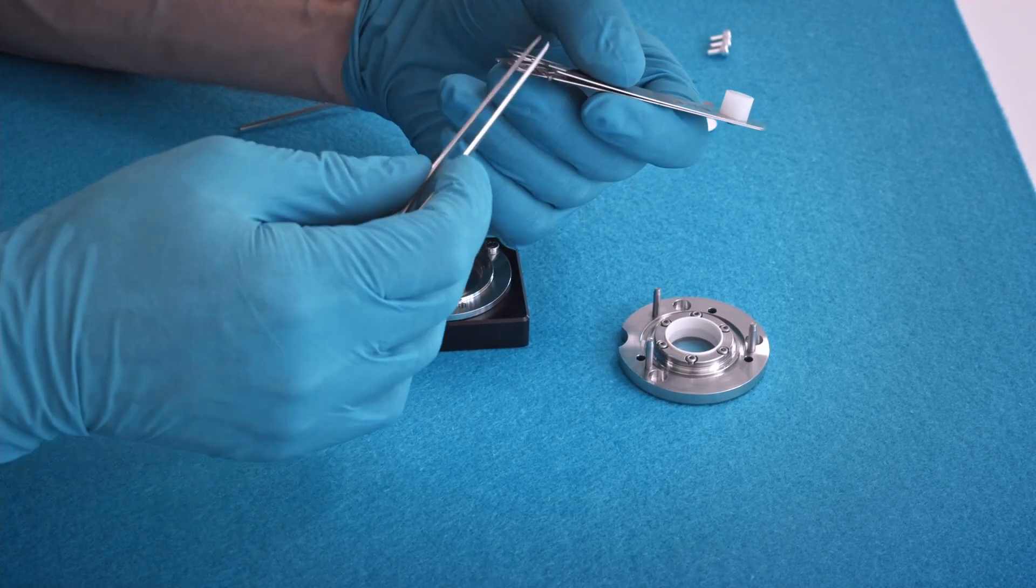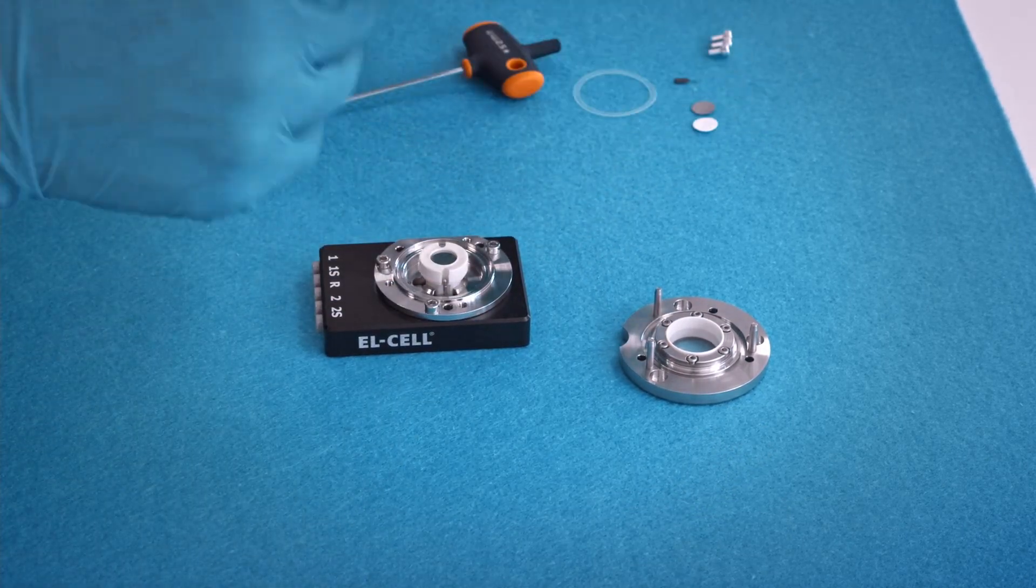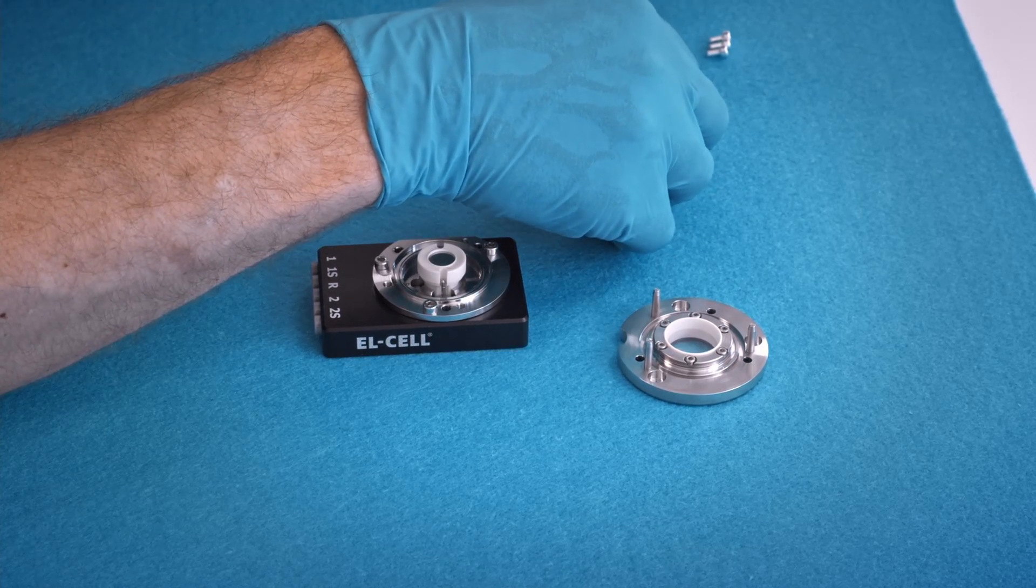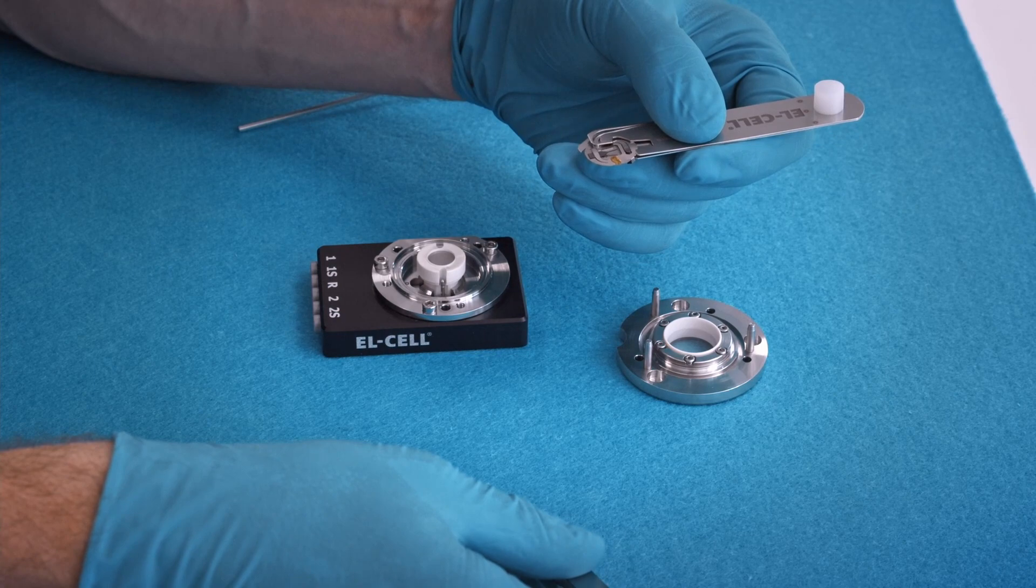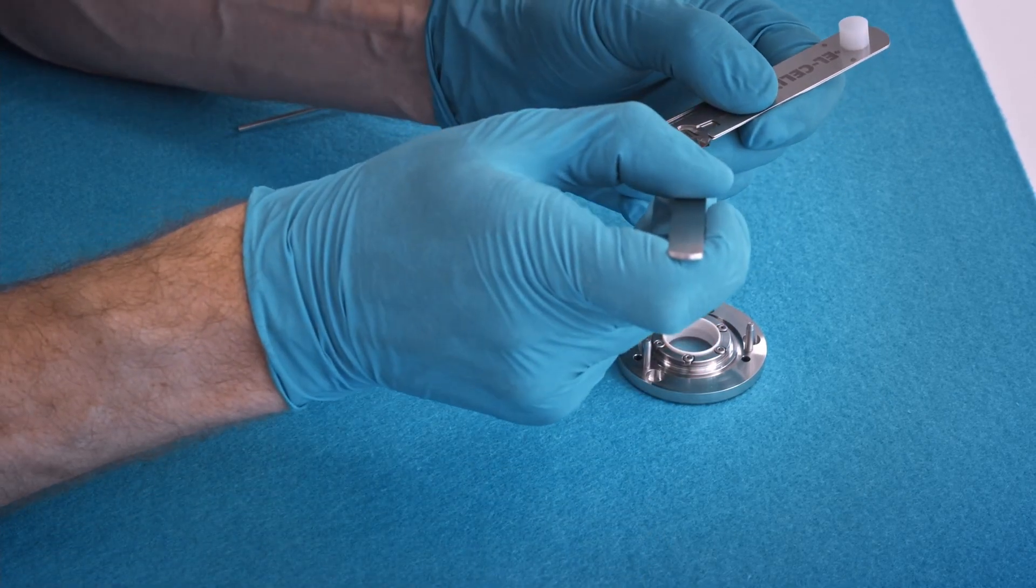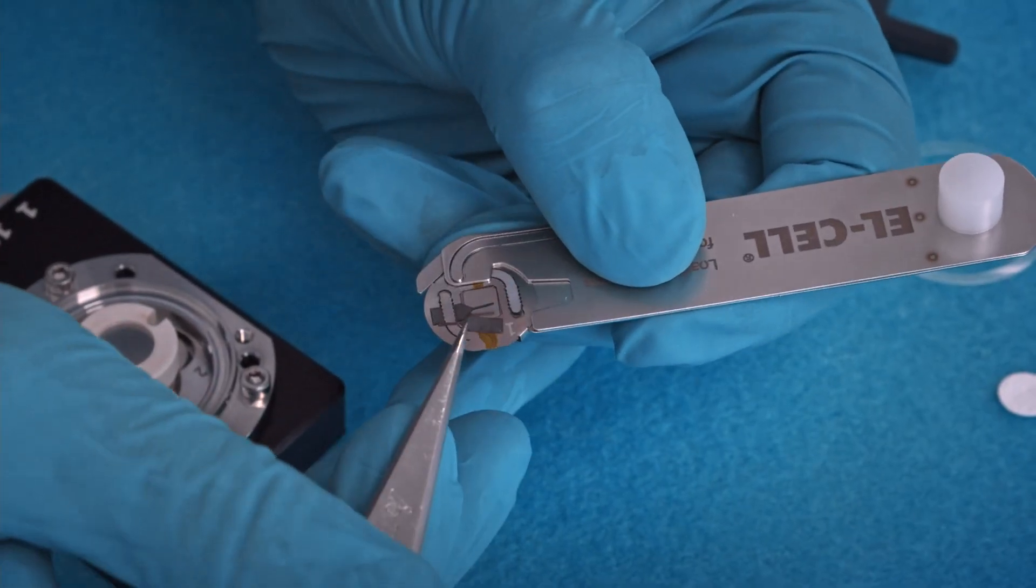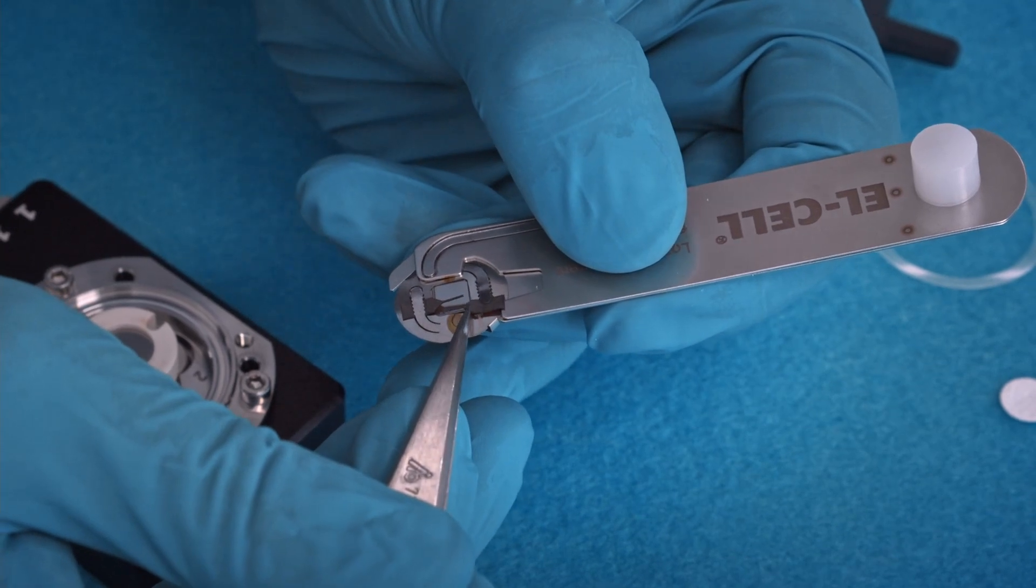Do the same for the second strip. When you compress the tweezers, then the finger lifts, and you can put the electrode strip below this contact finger.